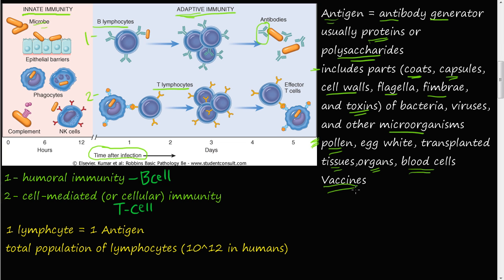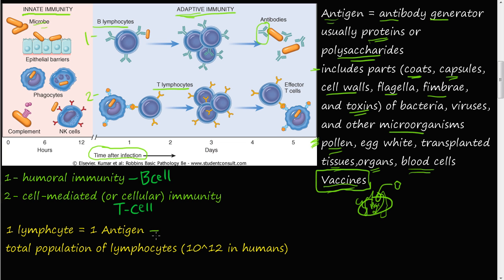Vaccines are a big part of our lives — we get vaccinated for smallpox, rubella, measles, and more. The idea is to take a small piece of a bacterium, such as part of its cell wall, and inject it into us. Our bodies then ask 'what is this foreign piece?' and create antibodies against it. Every time you come in contact with that piece again, your adaptive immune system will clear it out and eliminate it.